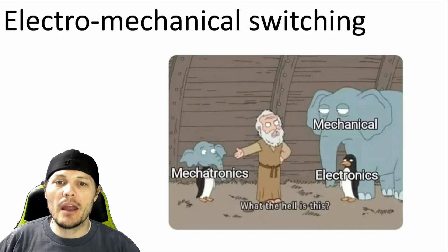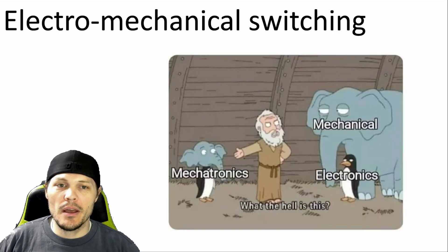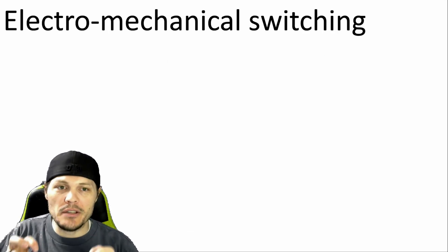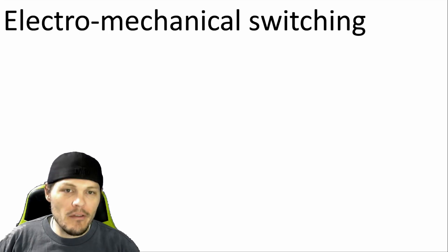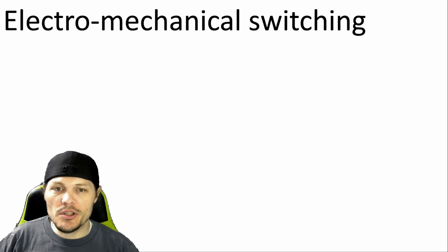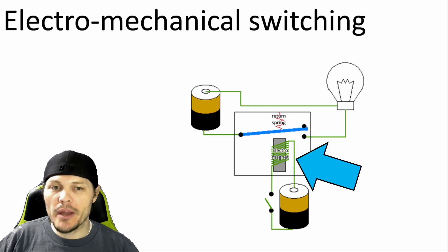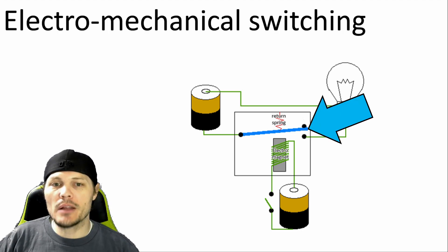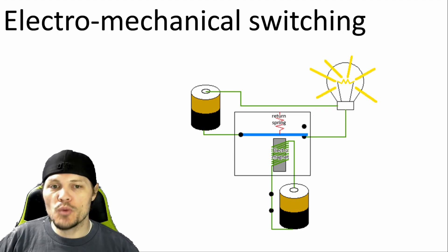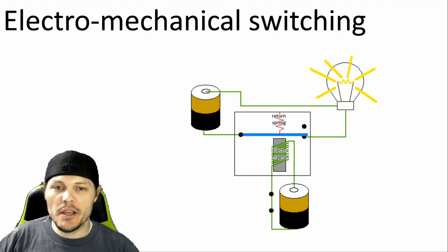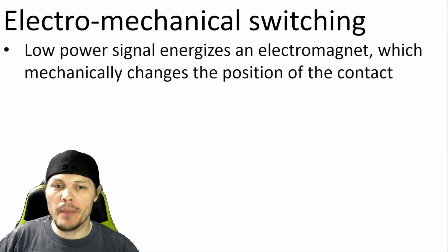Now let's talk about the electromechanical option: a separately installed contactor. A contactor is really just a high power relay. In either case, they're called electromechanical switches because they use an electromagnet to move a mechanical contact to switch the flow of electricity. This is particularly useful when you want to use a low power command to switch a high power circuit.